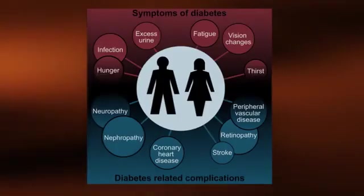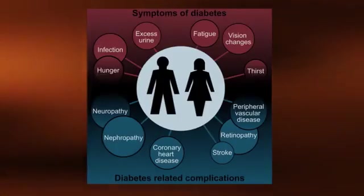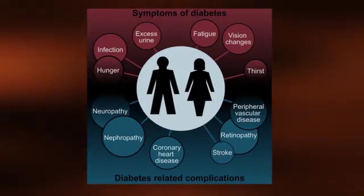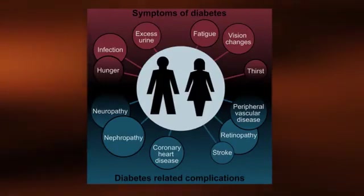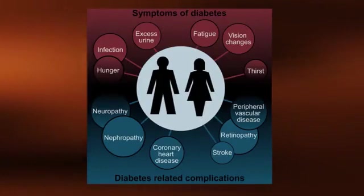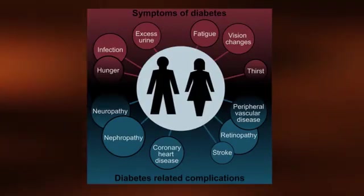Common symptoms for type 2 diabetes include thirst, frequent urination, fatigue, slow healing sores and frequent infections, and blurred vision.